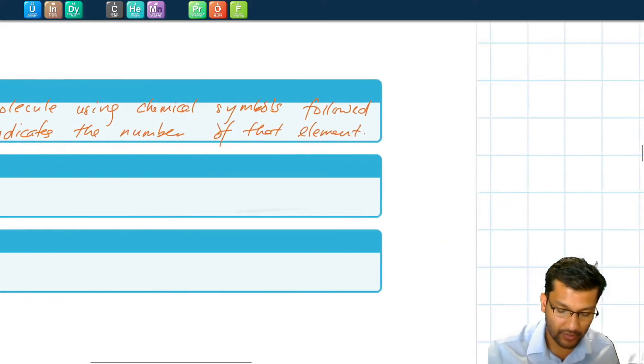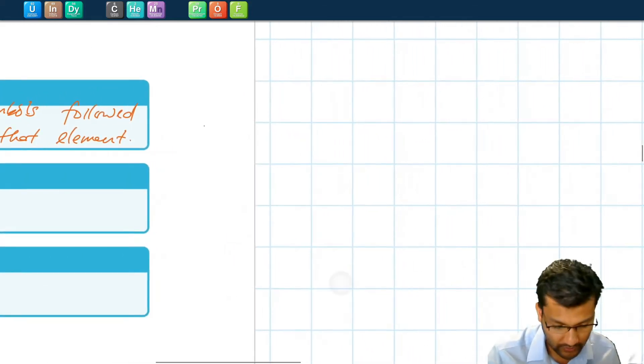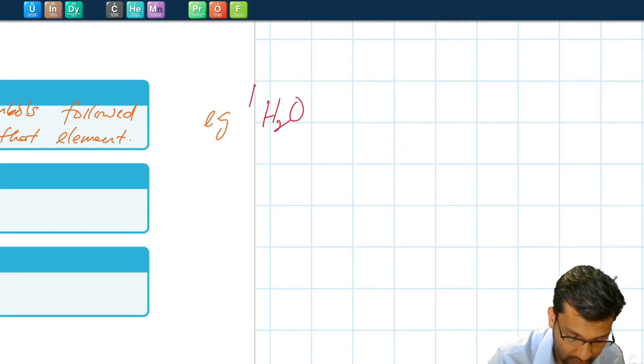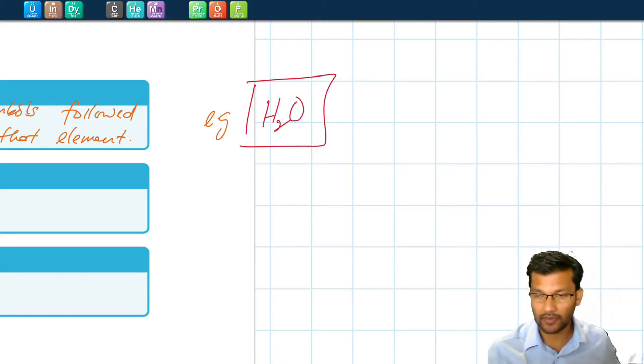For example, we've talked a lot about how water has formula H2O. My pen is going crazy. Let's try a different one. H2O. That's the molecular formula for water.